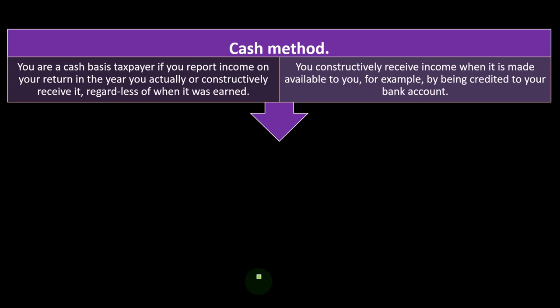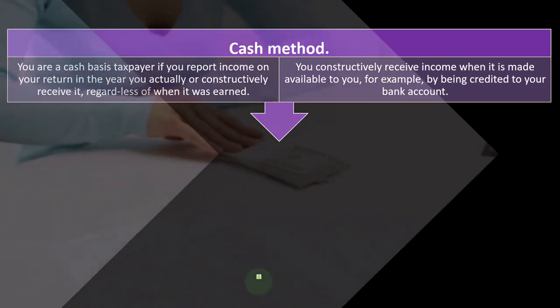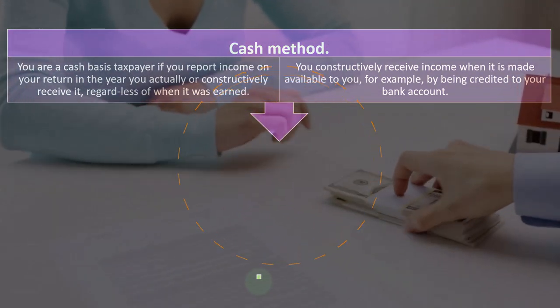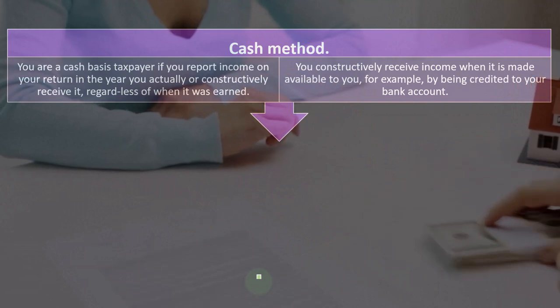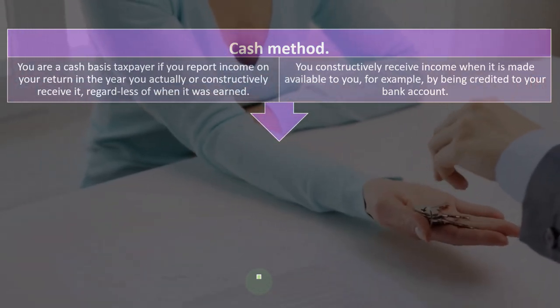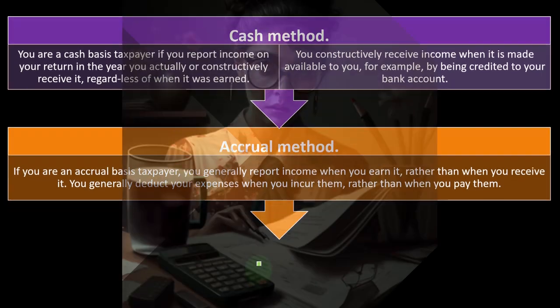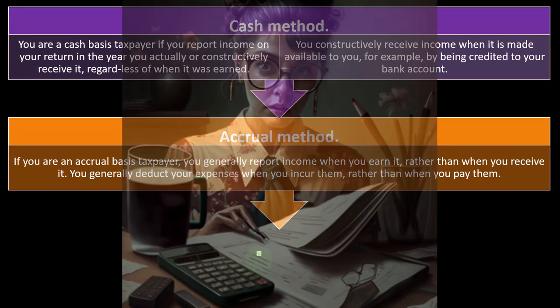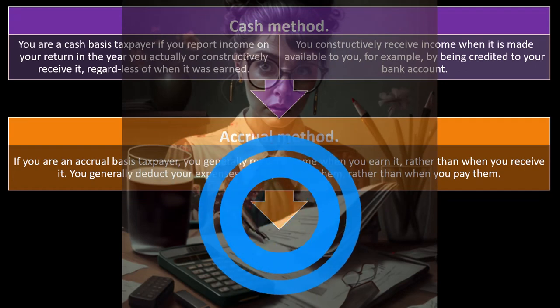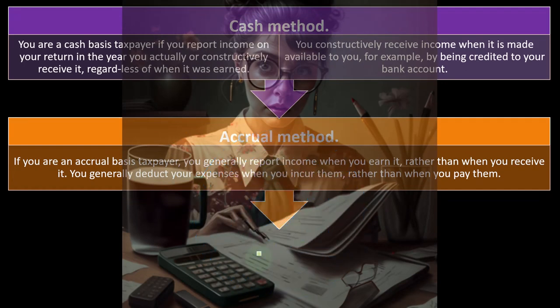Under an accrual-based system, you would record the income in December — when the rental property was used. You can see there's a timing difference which could manipulate the income and expenses around the cutoff of the end of the year. Accrual method: if you are an accrual taxpayer, you generally report income when you earn it rather than when you receive it, and you generally deduct your expenses when you incur them rather than when you pay them.